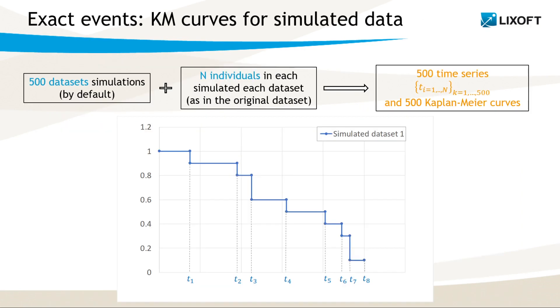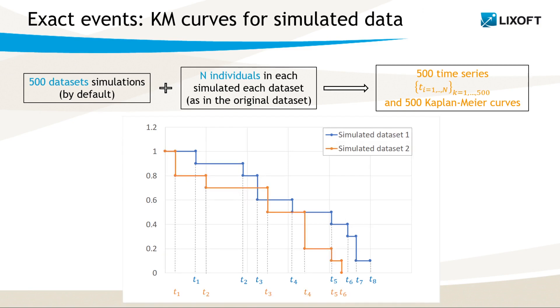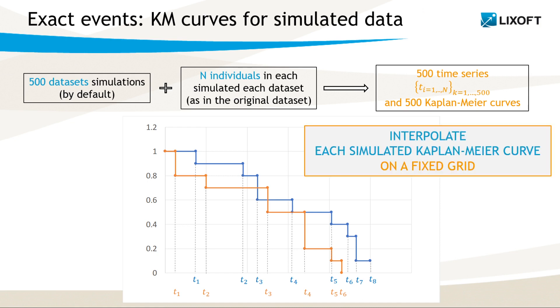To generate VPC plot, Monolix performs by default 500 simulations with N individuals as in the original dataset. As a result, we have 500 time series that produce 500 Kaplan-Meier curves. Each of these Kaplan-Meier curves has different time points because time is a random number, not a fixed grid. So we define such a grid and interpolate all simulated Kaplan-Meier curves on it.